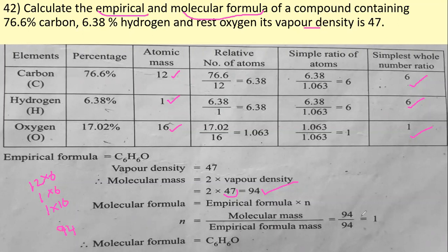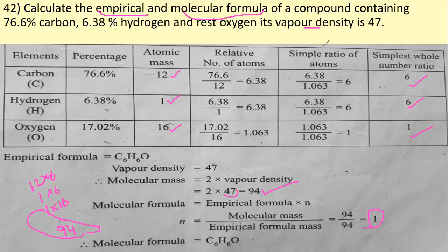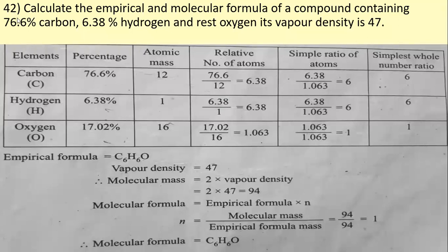The molecular mass is 94, divided by the empirical formula mass of 94, gives N = 1. So the molecular formula is C₆H₆O — the same as the empirical formula. If N were 2 or 3, we would multiply each atom count by that number. Here N = 1, so both formulas are the same.